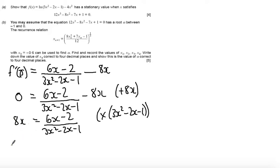So I get 8x times 3x squared is 24x cubed. 8x times minus 2x is minus 16x squared, minus 1 times 8x is minus 8x equal to 6x minus 2.